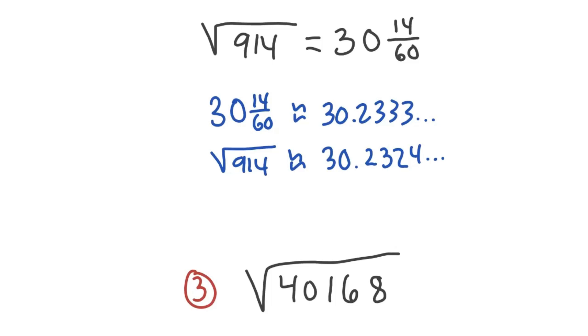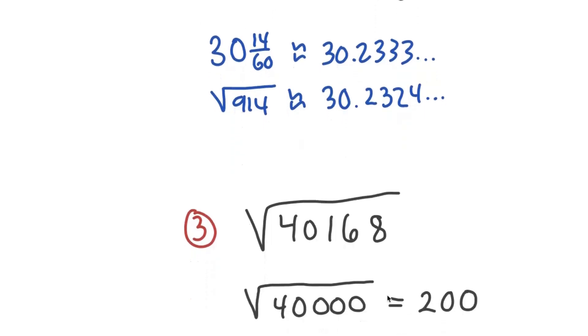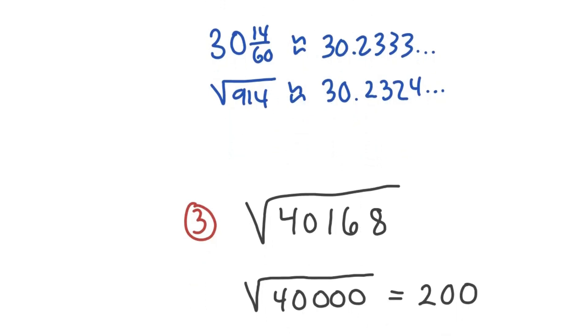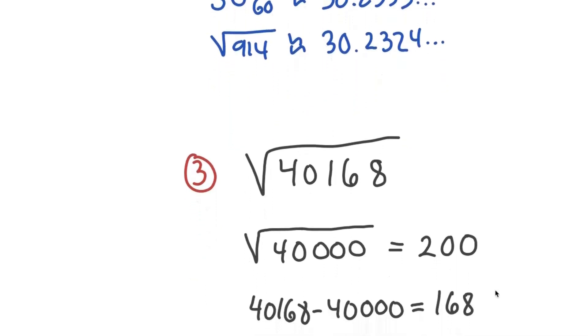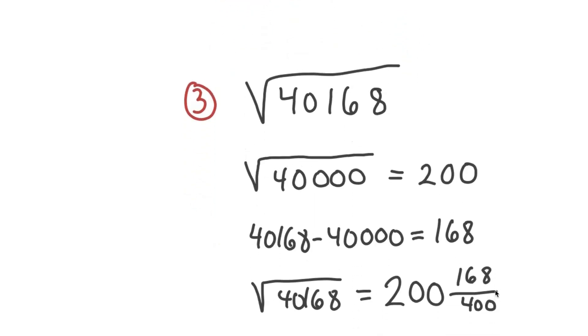Square root 40,168. Largest perfect square underneath that is 40,000, which is just 200. So find the difference there, 168. And we have our answer, just like that.